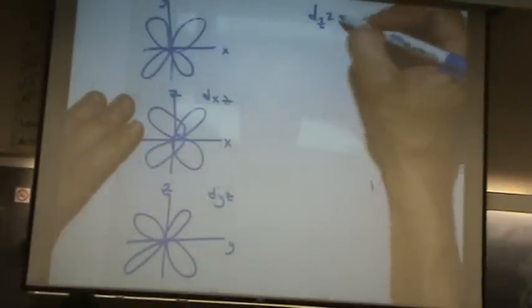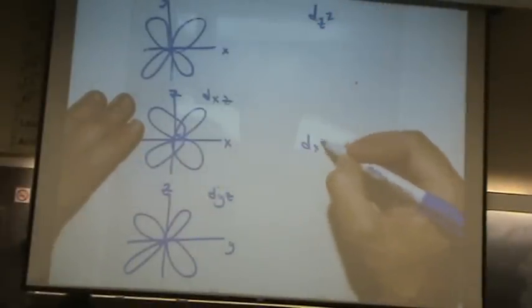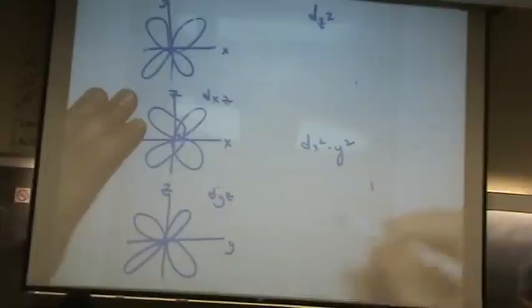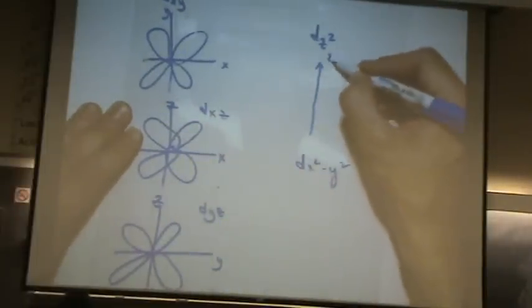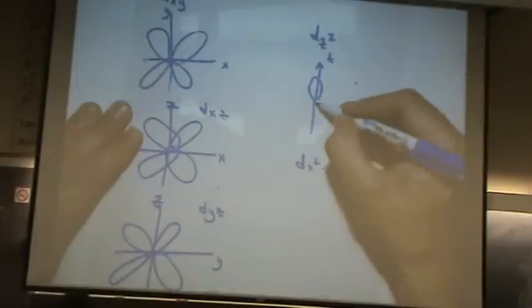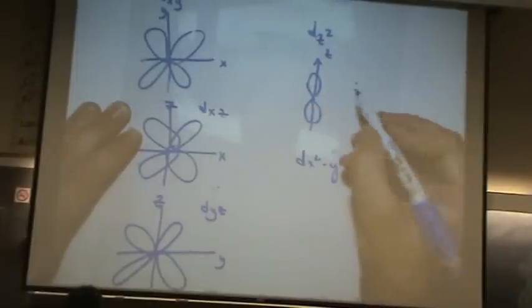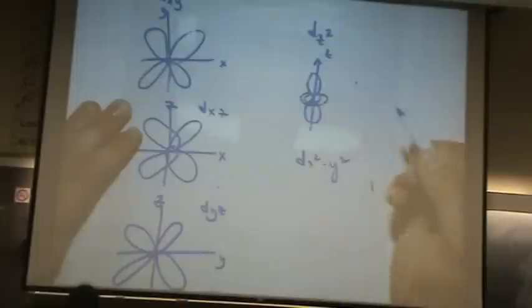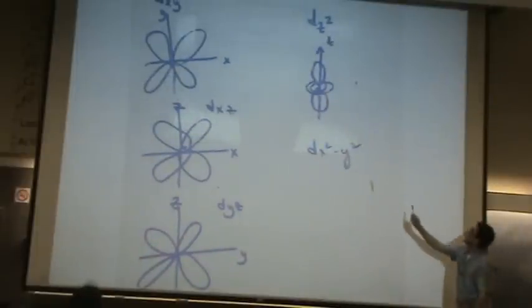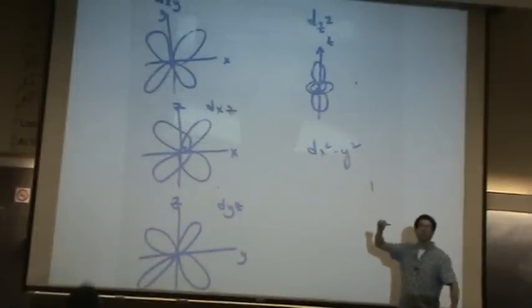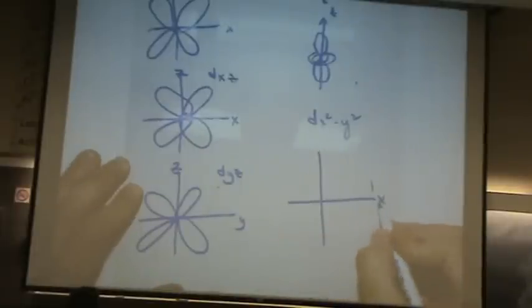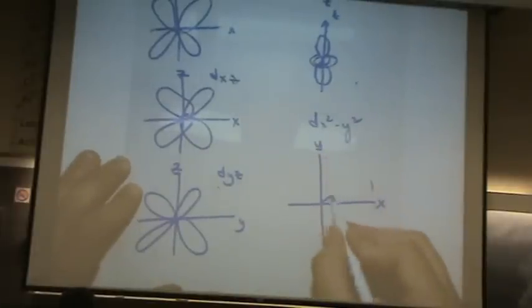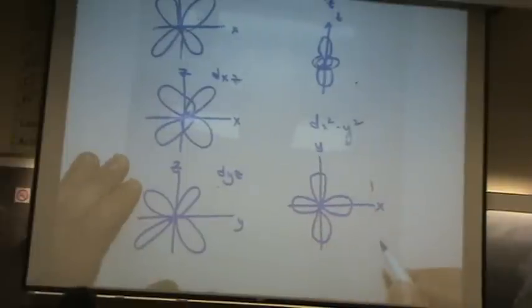Then you have the d-z squared and the d-x squared minus y squared. The ones with squares are the ones on the axis. So the d-z squared, that's on the z axis, it's the only one that does not look like a cloverleaf. It looks like a p-orbital with a donut or hula hoop around it. And the d-x squared minus y squared is on the xy axis, and that's the cloverleaf that literally lies on the xy axis.